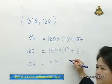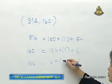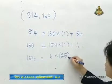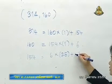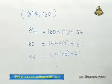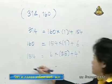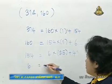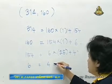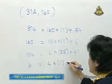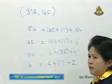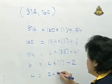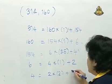คูณด้วยอะไรคะ? 160 เป็นตัวตั้ง แล้ว 154 คูณด้วย 1 บวกด้วย 6. ต่อไปค่ะ 154 เท่ากับ 6 คูณด้วย 25 บวกด้วย 4. ต่อไปค่ะ 6 เท่ากับ 4 คูณ 1 บวก 2. ต่อไปค่ะ 4 เท่ากับ 2 คูณ 2 บวก 0. (Multiply by what? 160 is the dividend, then 154 = 6×25+4, then 6=4×1+2, then 4=2×2+0.)